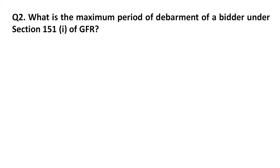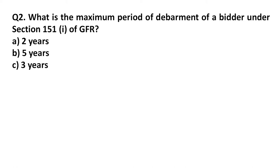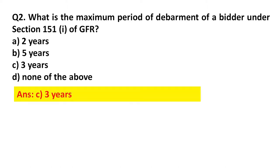Question 2: What is the maximum period of debarment of a bidder under Section 151, Section 1 of the GFR? Option A: 2 years. Option B: 5 years. Option C: 3 years. Option D: None of the above. Answer: 3 years.